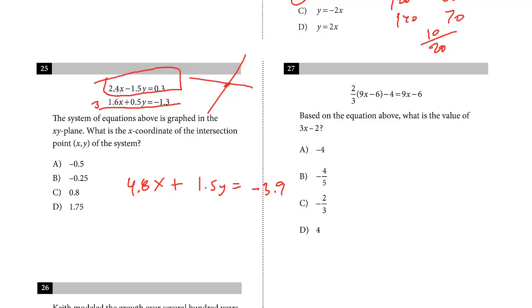And so this is going to be 7.2X, no Ys, and then here we have 0.3 and then we have negative 3.9, so that's going to be negative 3.6. And you can see this is exactly half, right? And it's negative. So X is going to be negative 0.5.